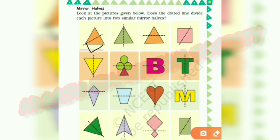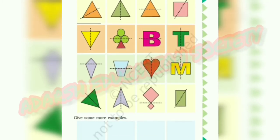Now, in the second picture, here is also a triangle. The dotted line divides the picture into two equal parts, so here we have to put a right tick mark. Next, a triangle where the dotted line does not divide the picture into two similar parts — no tick mark. For the rest of the pictures, you have to do it yourself and decide if the mirror half concept works or not. If it works, put a right tick mark; if it doesn't work, don't do anything.